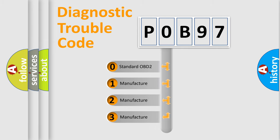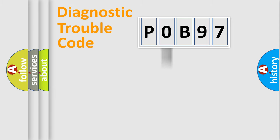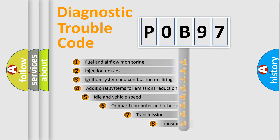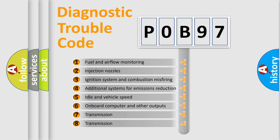If the second character is expressed as zero, it is a standardized error. In the case of numbers 1, 2, or 3, it is a manufacturer-specific error expression. The third character specifies a subset of errors.